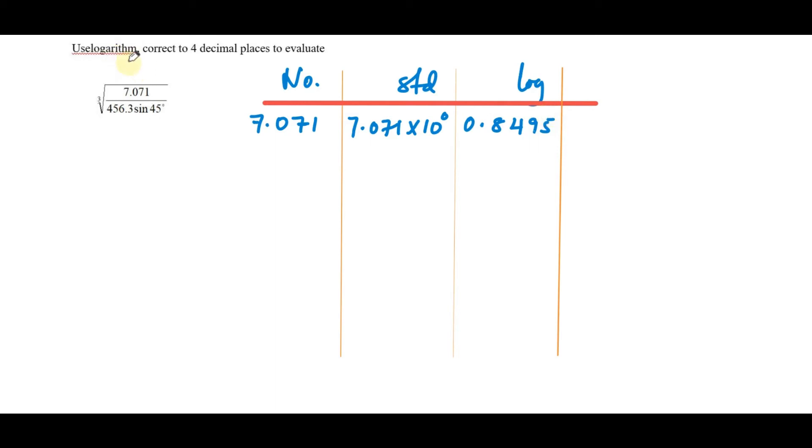That is the numerator. The denominator we have 456.3. Let's first deal with that. Writing in standard form: 4.563 times 10 squared. So logarithm of 10 squared is 2. Logarithm of 4.563 is 0.6593.